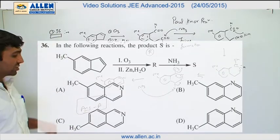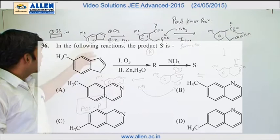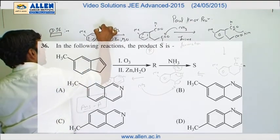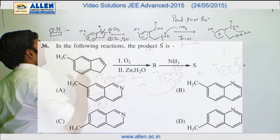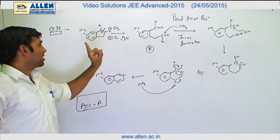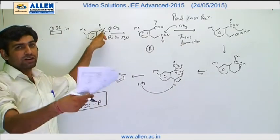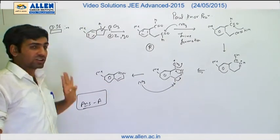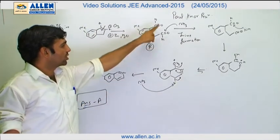Question number 36. A structure is given. With one equivalent ozone, it will break the outer double bond first, not the aromatic ring double bonds, because aromaticity would be lost. With excess ozone, the ring can also break.